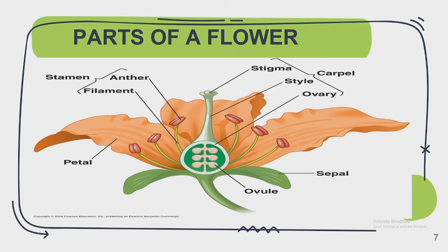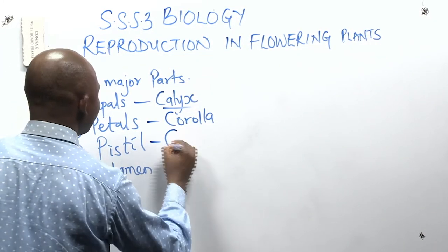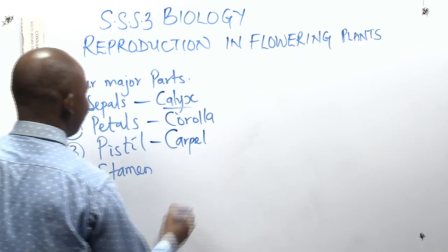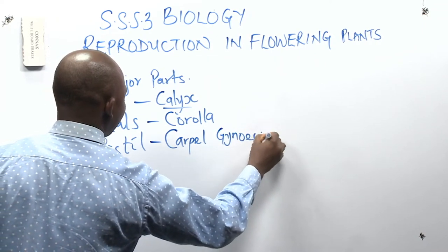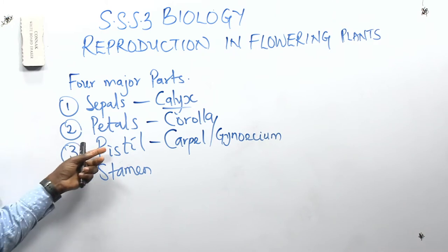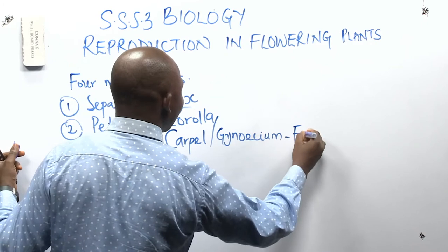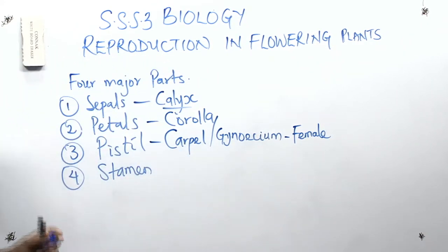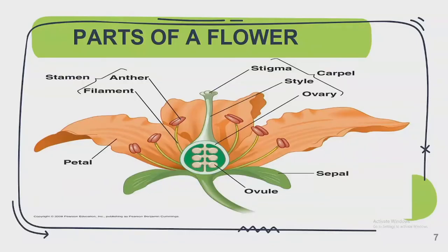The third part of the flower is the pistil — also called carpel or gynoecium. A group of pistils is what we refer to as gynoecium. This is the female organ in the flower. When you see any of these three terms — pistil, carpel, or gynoecium — know that we are talking about the female parts.